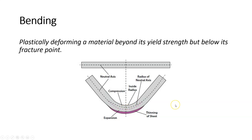Compression on the inside, expansion on the outside, and they zero out at some point — that's the neutral axis. It's not quite halfway through the material; it's about 60 percent through the material. We do cover sheet metal in a lot more detail in the detailing class, MDT 110, where we actually go through the calculations and draw sheet metal parts.